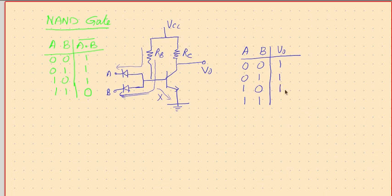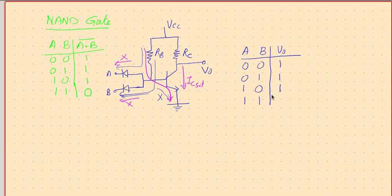When both inputs are one, this is a special case: neither this diode can conduct nor this diode can conduct. So there won't be current draining through either diode, and hence whatever current is flowing from VCC to ground through RB has to flow through the base-emitter junction. There is base current, which drives the transistor into saturation. Therefore IC saturation flows through the collector, the transistor is on, and the output will be a saturation voltage — a very small value that is considered as a low.